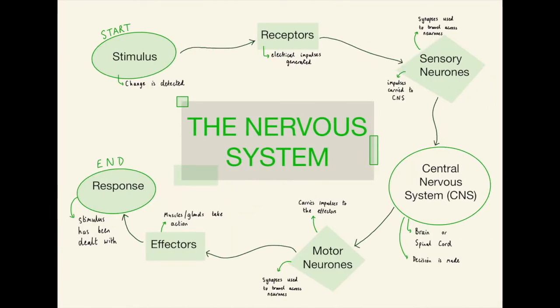Next, we have the nervous system. There is a lot you need to know about the nervous system, but I've broken it down into these main components. Think of this as a flow chart. A stimulus is detected — receptors on your body will detect this change. For example, let's say you got stung by a bee. The pain receptors in your hands would notice this and create an electrical impulse, and send it to the central nervous system via your sensory neurons. Neurons are just a way to transport these electrical impulses around the body.